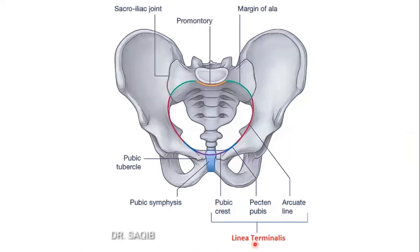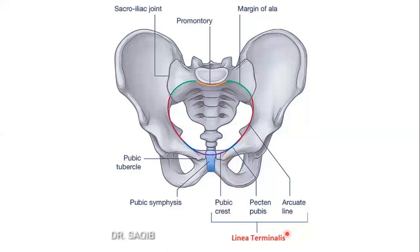You could see the linea terminalis. This is the ala of the sacrum, this is the sacrum bone, and this is the coccyx. This is the arcuate line — this portion of the ilium is called the arcuate line. And this is the pecten pubis, and this is the pubic crest. These three parts — the arcuate line, the pecten pubis, and the pubic crest — constitute the linea terminalis.